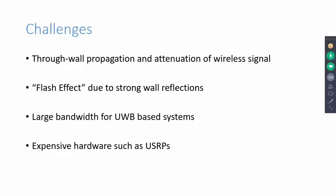Secondly, if wireless transmitter and receiver are placed on the same side of the wall, then strong wall reflections of incident waves will make it very difficult for the receiver to capture minute human body reflections that are coming from behind the wall. This effect is known as flash effect.